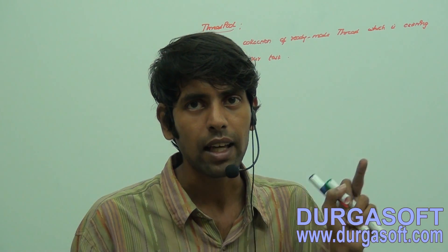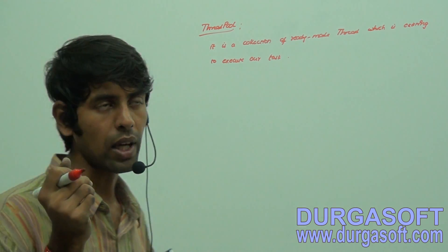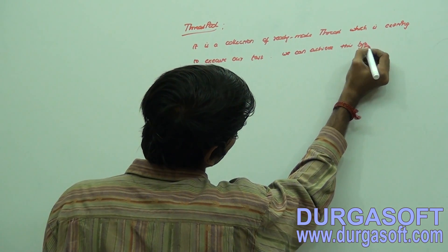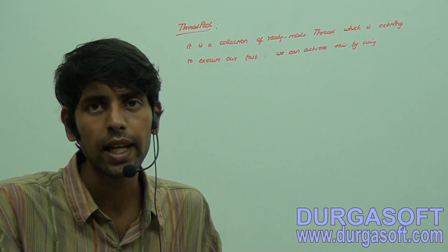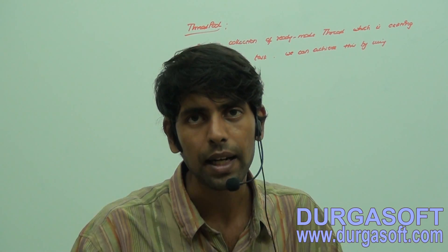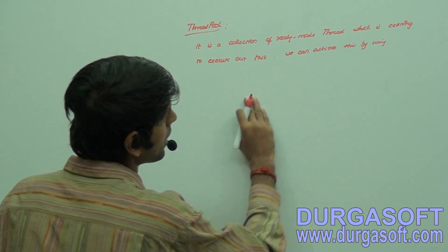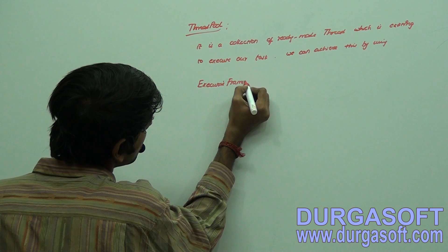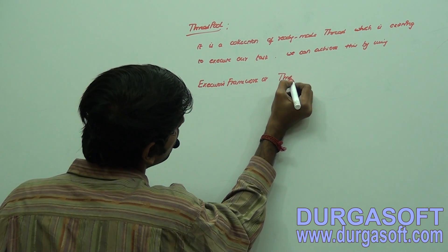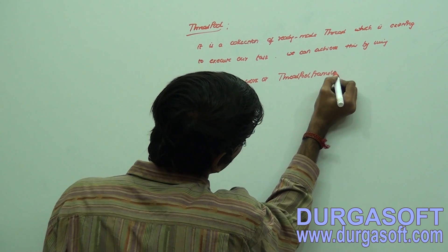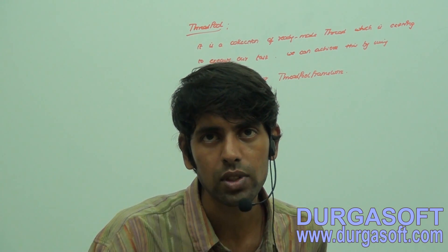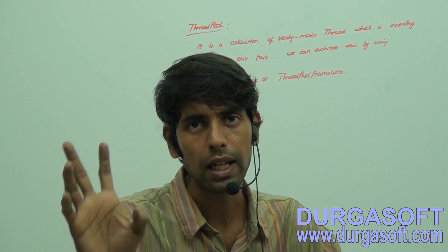To achieve this thread pool, Sun Microsystems introduced a framework called the Executors framework, also called the thread pool framework. They have given some ready-made classes — similar to frameworks like Hibernate and Spring. All the related things are available in one class: the Executors class. If you use that Executors class, everything will be handled.